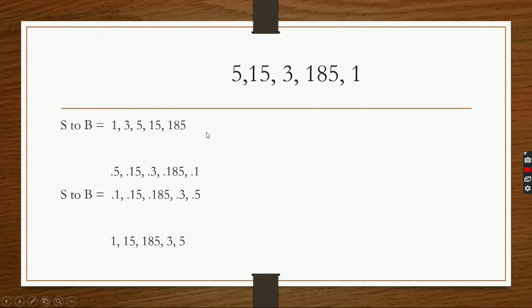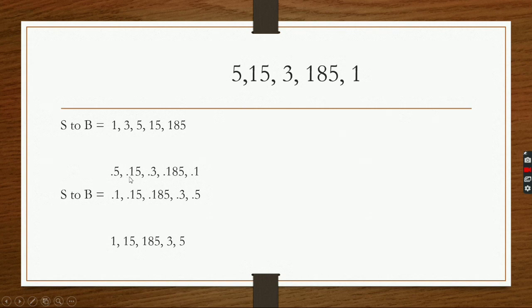But if I convert these numbers into decimal fractions, I have taken the same numbers. Here 5, here 5. But I put the decimal fraction before each number. Here you can see I have used the exact same numbers, but I have taken the decimal fraction — that is, the point dot.